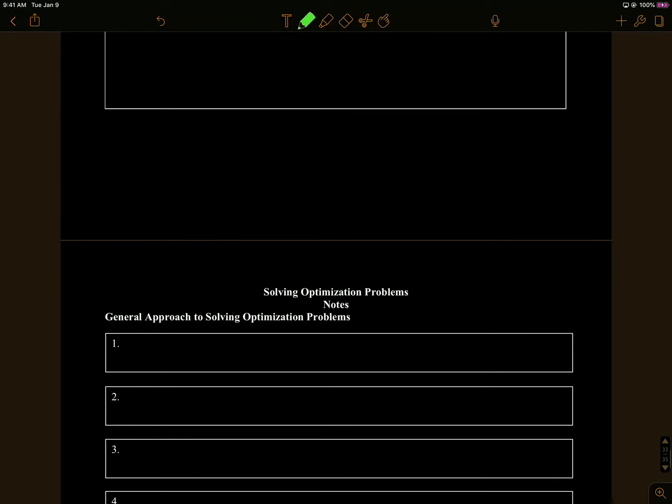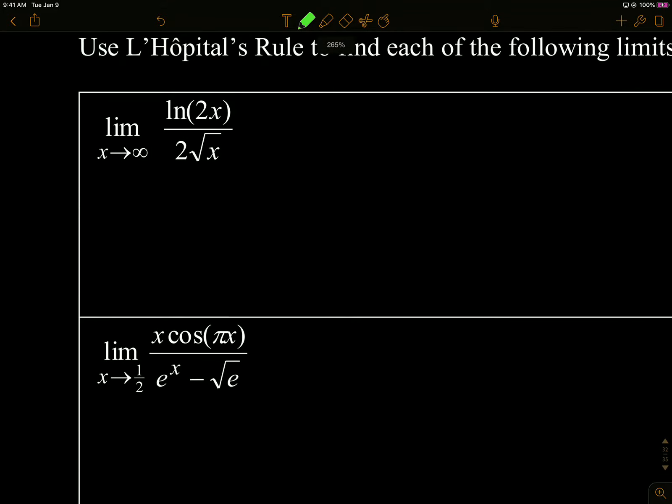Here's some more practice. If I plug in infinity, I'm getting an indeterminate form here, so I'm going to L'Hôpital it. In the numerator I get one over, oh pen died again. I get one over 2x times 2. On the bottom I get one half times 2 is one, x to negative one half, so it's going to be, let's see, let's simplify this.